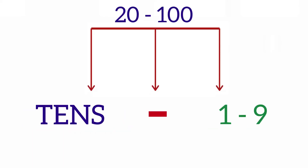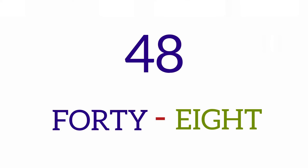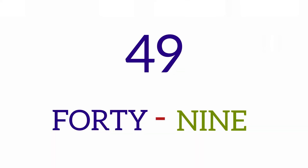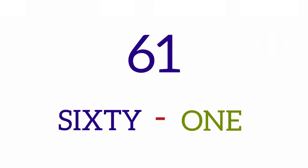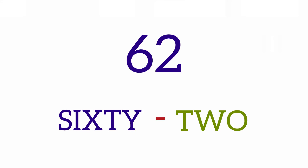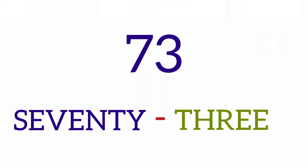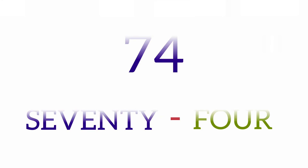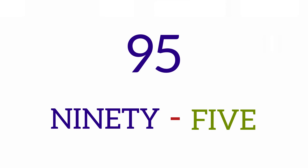As we mentioned, when we say numbers 20 to 100, we must form these numbers in 10s. A hyphen is needed if the number is between 21 to 99 and the second number is not a 0. These two numbers have to be separated by a hyphen and a number from 1 to 9. For example, 48, 49, 61, 62, 73, 74, 94, 95, 96.